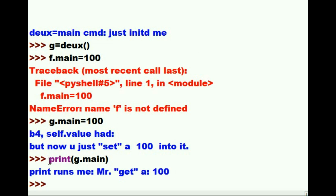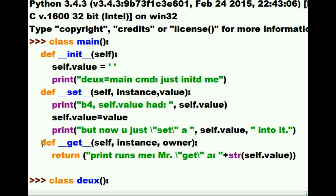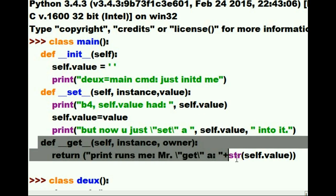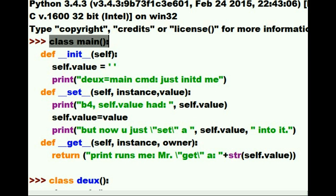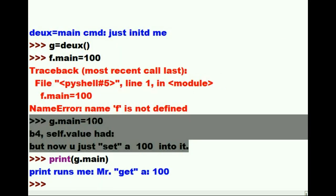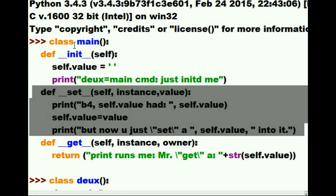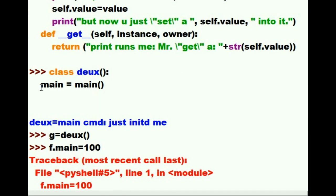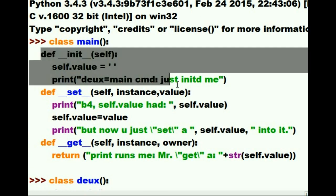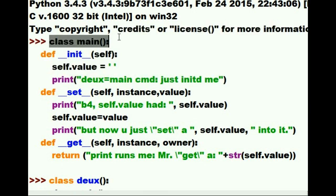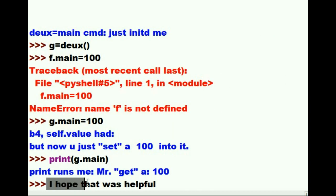The point of all of that was that print triggers the execution of the double underscore get method in class main. An assignment statement, g.main equals 100, triggers the execution of the double underscore set method in our class main. And assigning the internal variable of class deux's main to the class main itself triggers the execution of the double underscore init method in class main. I hope that was helpful.